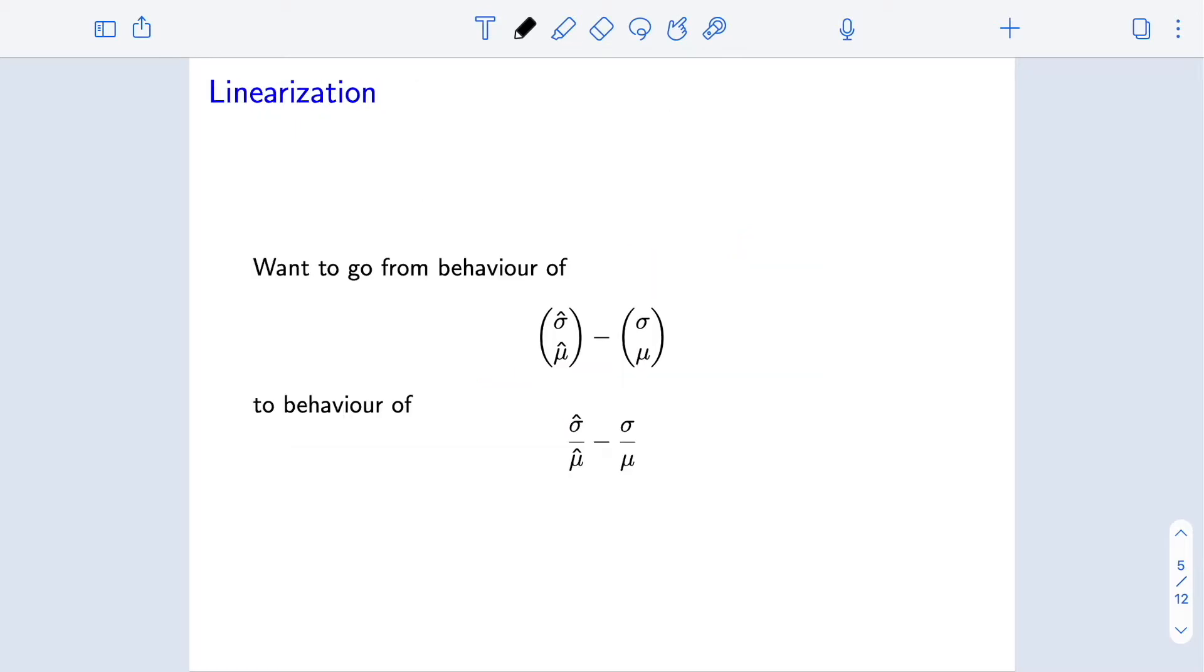Now, we would like to take this behavior, the behavior of estimator minus truth as a vector, and use that to tell us about the behavior of the ratio of these two estimators minus the ratio of the two parameters. We're going to do this via linearization or a first-order Taylor series expansion, or what's sometimes called the delta method.